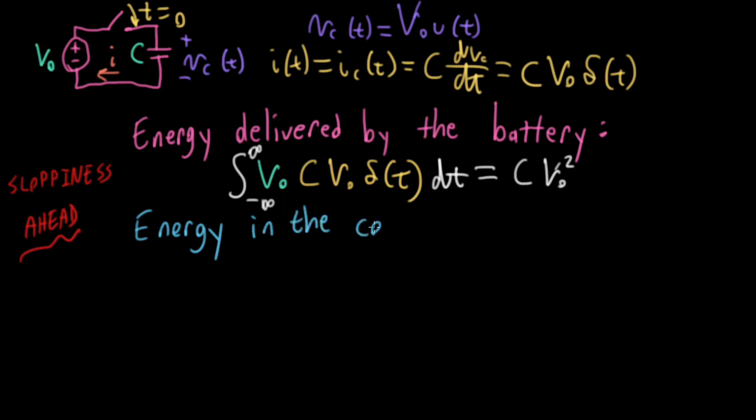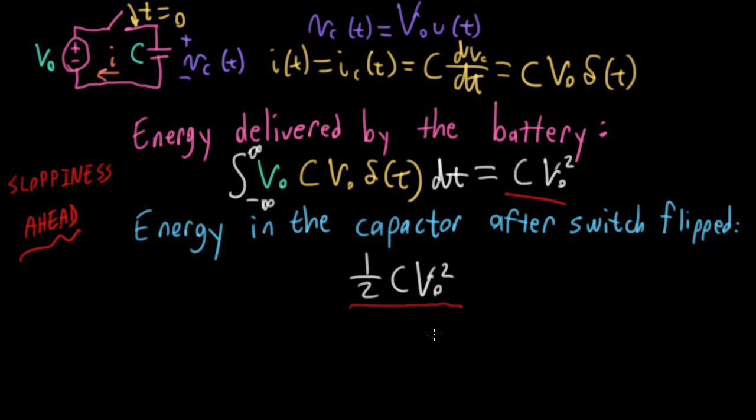But what is the energy in the capacitor after the switch is flipped? Well, according to our usual sophomore circuit theory, or even your freshman physics class in college, it's going to be 1 half C V0 squared, because V0 squared is going to be the voltage across the capacitor after this switch is flipped. So I have C V0 squared. Here I have 1 half C V0 squared. Where did the other half of the energy go? It looks like we violated conservation of energy.